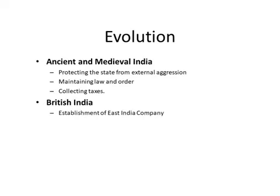The establishment of the East India Company increased the government's powers manifold. Several acts, legislations, and statutes were brought by the British Parliament for regulating public safety, health, morality, transport, and labor relations. Delegated legislation was accepted as a legitimate power of the executive in the Northern Indian Canal and Drainage Act 1873 and the Opium Act of 1878. In many statutes, provisions were made for granting of permits and licenses and settlement of disputes by administrative authorities and tribunals.